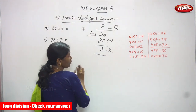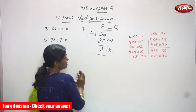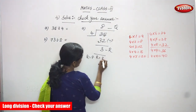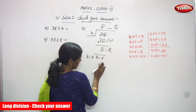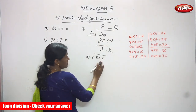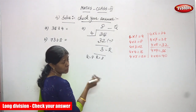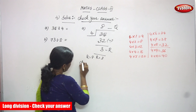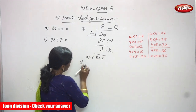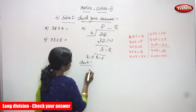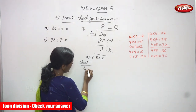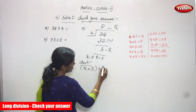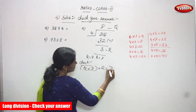Now we know the quotient is 8 and the remainder is 3. But we must check whether the answers are right or wrong. To check your answer, the formula is: (quotient × divisor) + remainder = dividend.